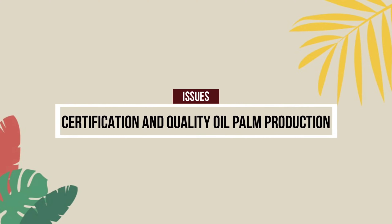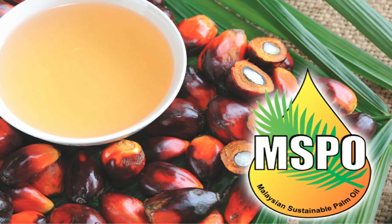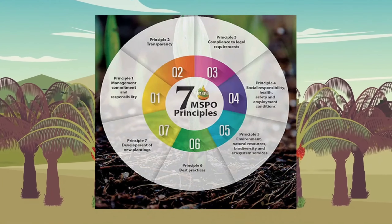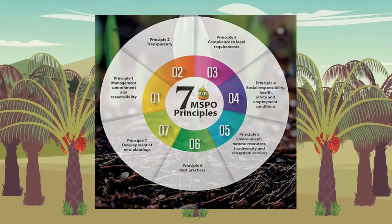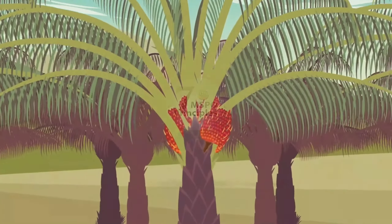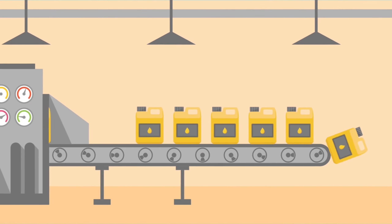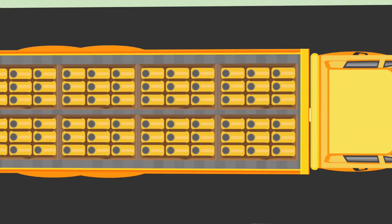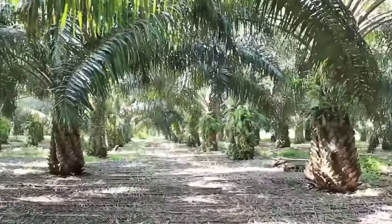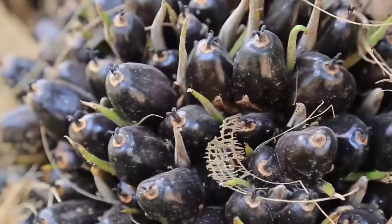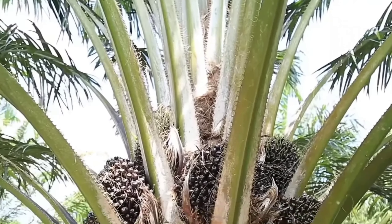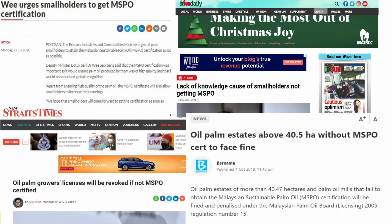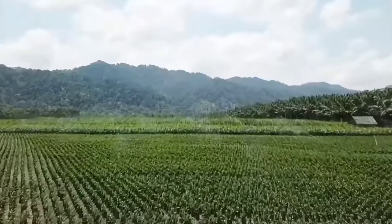The next issue is certification and quality of oil production crisis. MSPO, Malaysia Sustainable Palm Oil, is a certification used to coordinate the quality of oil palm production, guaranteeing that farmers who obtain the certification are enabled to export their oil palm production and break into the local and international market. There is an issue involving smallholders who undergo oil palm planting where some of them do not follow the criteria of MSPO.